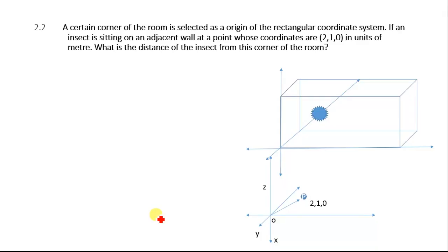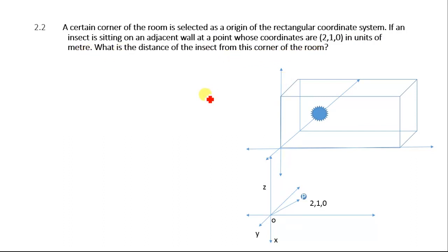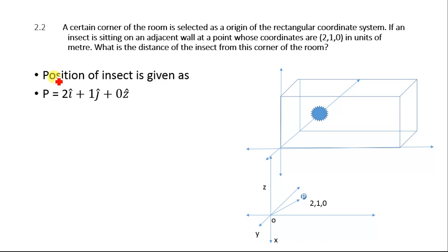Problem 2.2: A certain corner of a room is selected as the origin of a rectangular coordinate system. An insect is sitting on an adjacent wall at coordinates (2, 1, 0) in meters. What is the distance of the insect from this corner? The position vector is 2i + 1j + 0k.